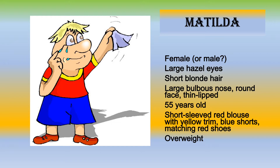She wears a short-sleeved red blouse with yellow trim. She has wide blue shorts and red shoes, and she's short and overweight. This will be the basic description, but you can dress it up with more colorful adjectives. For example, the red shoes do not match the top, and can be described as the color of dried blood.